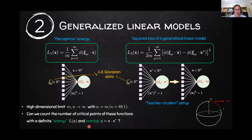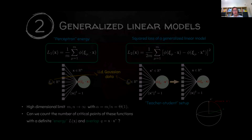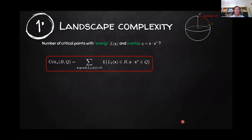This is a classical setup, especially in statistical physics analyses of these problems. The precise question we are interested in is: can we count the number of critical points of L1 and L2 with a definite loss value and a definite overlap — in the case of L2 — between x and x-star? The overlap is just the scalar product; it gives the distance on the hypersphere between these two points. This is the quantity we are trying to compute: the number of critical points of L2 with loss value in set B and overlap in set Q.